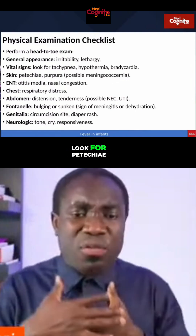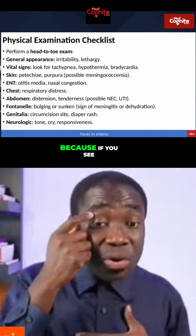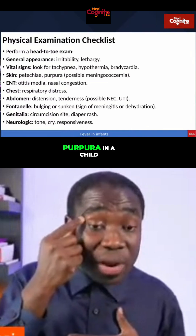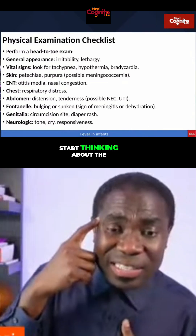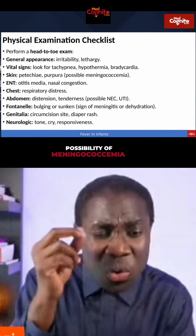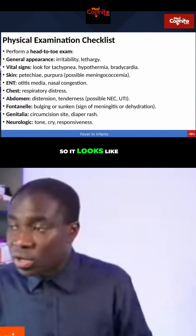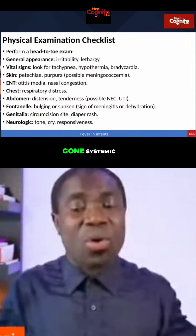On the skin, look for petechiae, look for purpura. Because if you see purpura in a child with fever, start thinking about the possibility of meningococcemia — meaning the meningitis has now gone systemic.